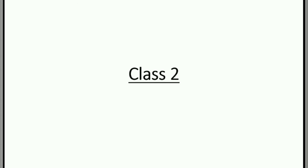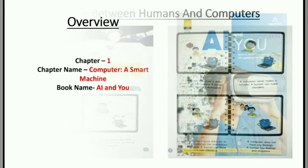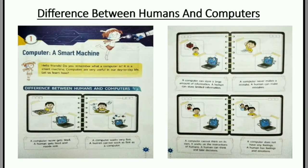Dear students, welcome to Study Bus, your online study channel. Today we are going to study the computer subject for Class 2. The chapter number is one, chapter name: Computer, a Smart Machine. The book name is AI and You. In the first page you can see the difference between humans and computers.